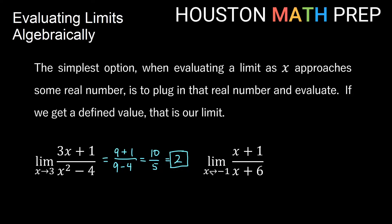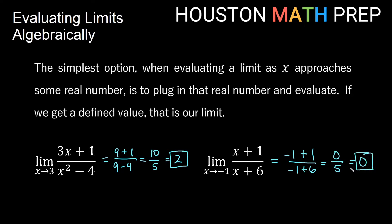Next example: the limit as x approaches -1 of (x + 1) / (x - 6). Negative 1 makes the top 0, but that's fine — it's dividing by 0 we worry about. The only problematic value would be x = -6, giving a denominator of 0. Since -1 is fine, we plug in: (-1 + 1) on top gives 0, and (-1 + 6) on the bottom gives 5. So the limit is 0/5 = 0.